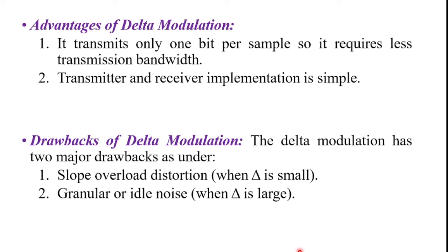The second advantage of delta modulation is that the transmitter and receiver implementation is very simple. There is no analog to digital converter required in delta modulation. The third advantage is that it is a one-bit quantizer, and the fourth advantage is that it is very easy to design the modulator and demodulator.